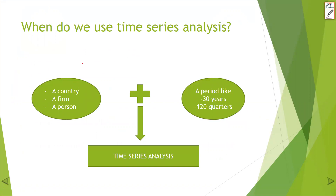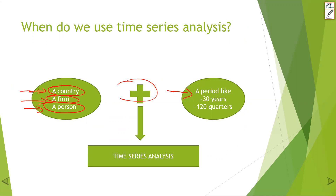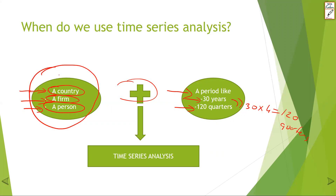First of all, the first question — when do we use time series analysis? If we have one entity — a country, a firm, or a person — and we have a period like 30 years or 120 quarters (that is, 30 multiplied by 4, so 120 quarters), then together we have time series analysis. So if we have one of them — a country, a firm, or a person — plus a period, we have time series analysis.